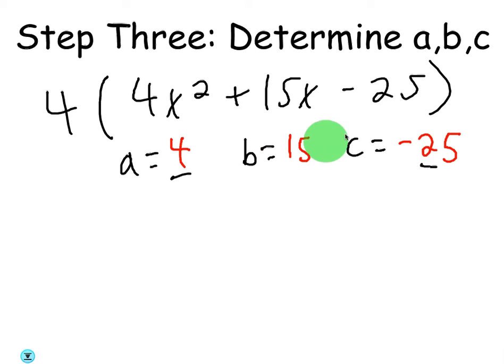Now, before it would have been 16, 60, and negative 100. Makes it easier when you pull the 4 out, or whatever the GCF is. All right, so what's going to go on top of the x? Anybody know? Good, negative 100. A times c. What goes on the bottom?